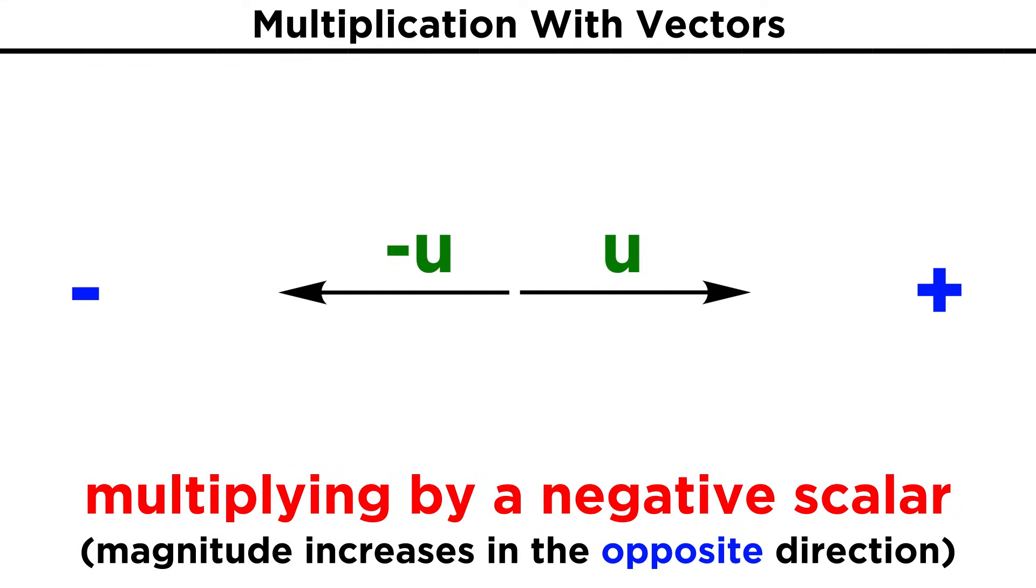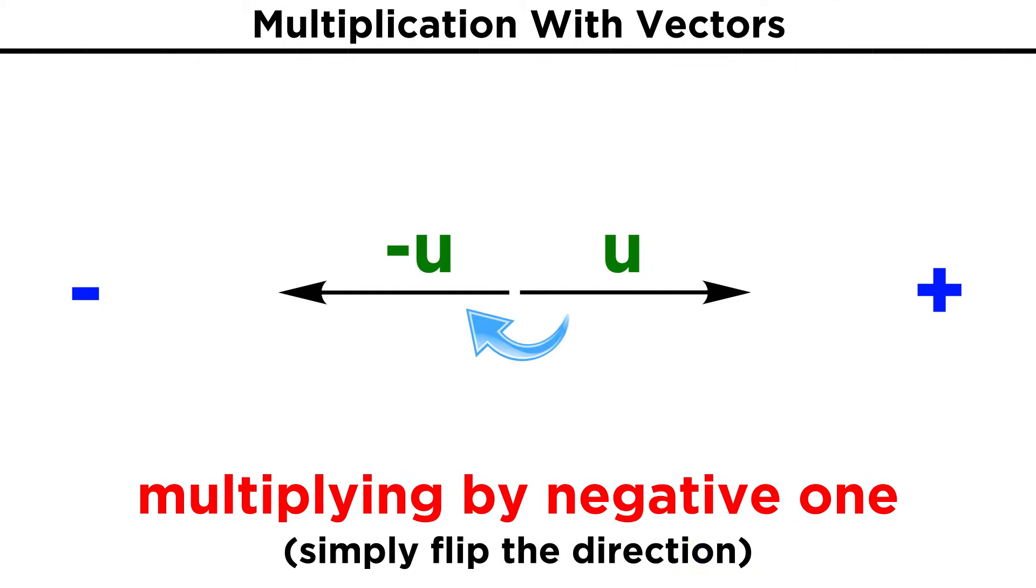If the scalar is less than zero, or a negative number, we still alter the length of the vector in the same way, but we also reorient it to point in the negative direction relative to its original position, which is just precisely the opposite direction or 180 degrees away. So vector U times the scalar negative one will just flip it over in this manner to give us negative U.